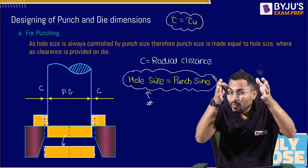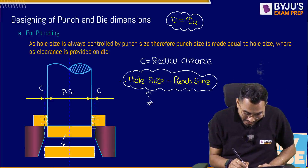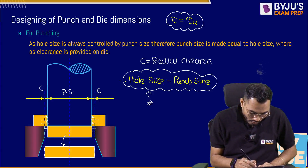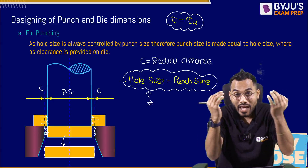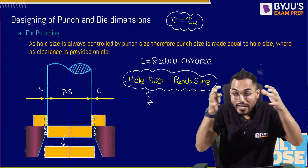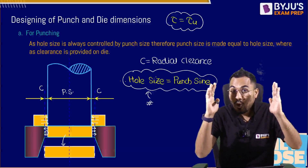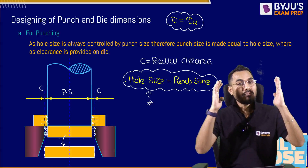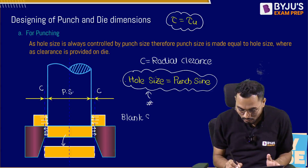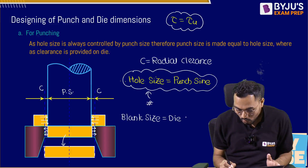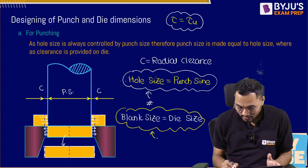The blank coming out also undergoes elastic recovery and expands. When it expands, it settles down on the die land. The raw material sheet is like a parent getting attracted to the child — it contracts. The blank is like a child getting attracted to the parent — it expands and settles on the die land. Once this blank or slug comes out, it has exactly the same shape and size as the die. Therefore: blank size remains exactly equal to die size.